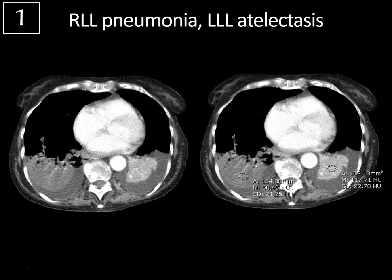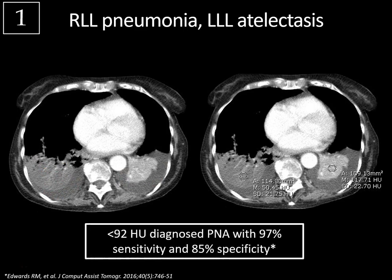Notice how with the atelectatic lung there's volume loss — you can see that lung has collapsed. The lobe is very small and it's surrounded by this effusion, whereas with the consolidated lung filled with pneumonia, it's just floating on top of the effusion; it's taking up space and you don't see any volume loss. There's actually a nice study by Edwards et al. that showed a threshold of 92 Hounsfield units diagnosed pneumonia with 97% sensitivity and 85% specificity.